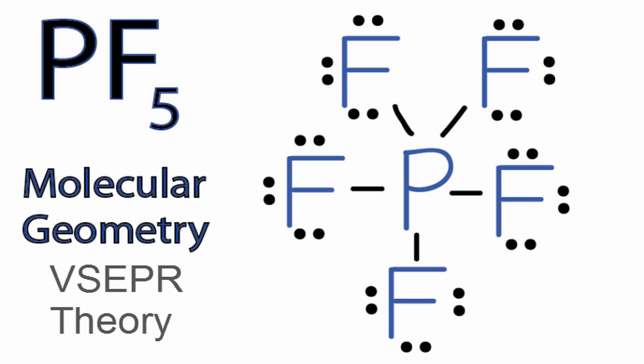According to valence shell electron pair repulsion theory, those fluorines are going to spread out as far away from each other as they can and still remain bonded to the phosphorus atom.